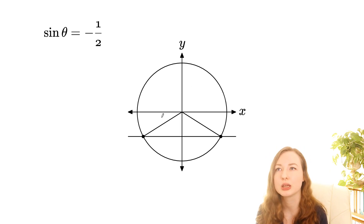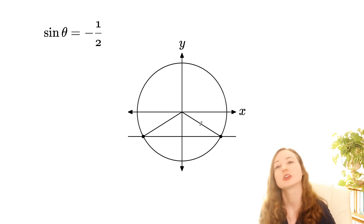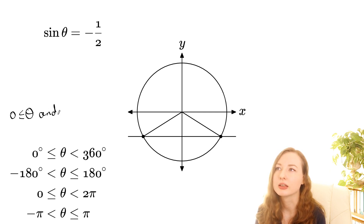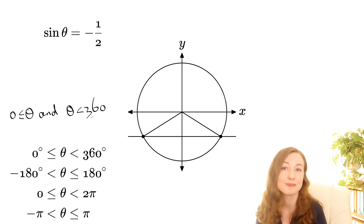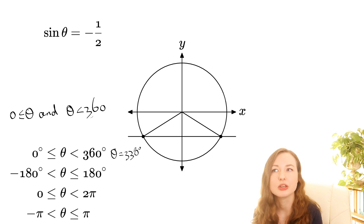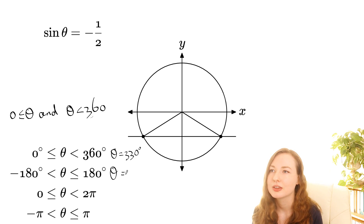You could also think of it as being 360 minus 30, so that would be 330. Your teacher or your test or whatever textbook is going to tell you a range of values that they want. If you haven't seen this notation before, it just means that zero is less than or equal to theta, and theta is less than 360 — it's just sort of wrapping up those two statements. If they said that range, one of the solutions would be theta equals 330 degrees. If they instead said negative 180 to 180, you would have to answer theta equals negative 30 degrees.